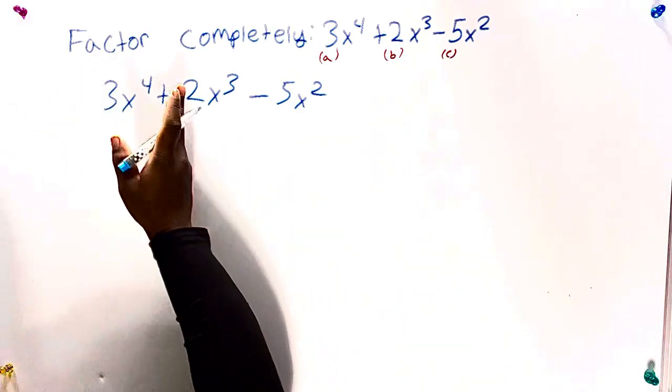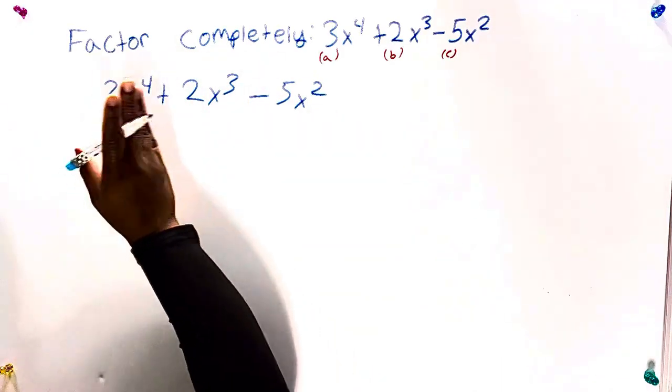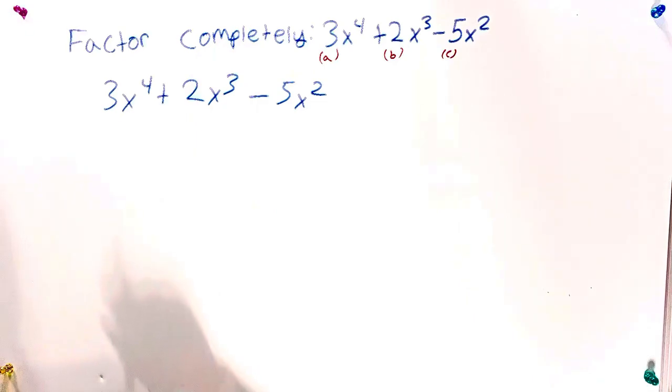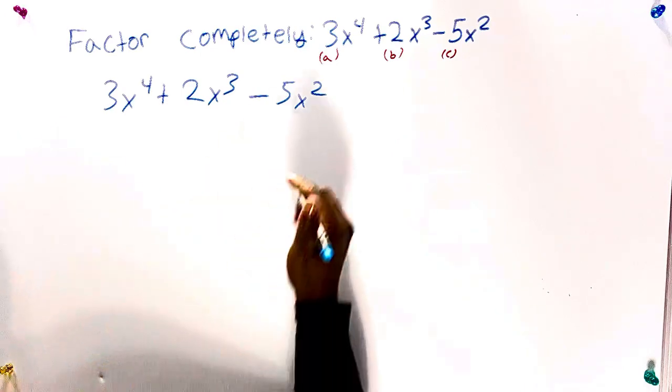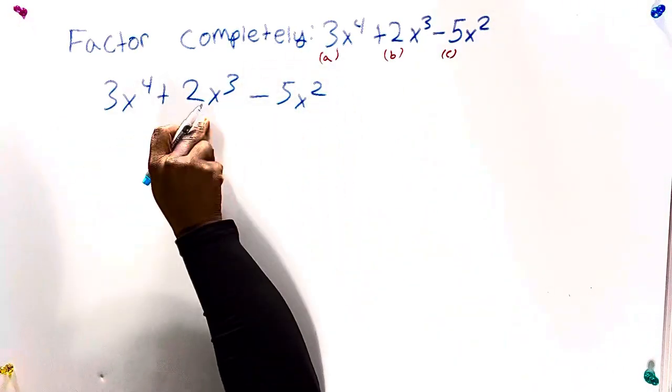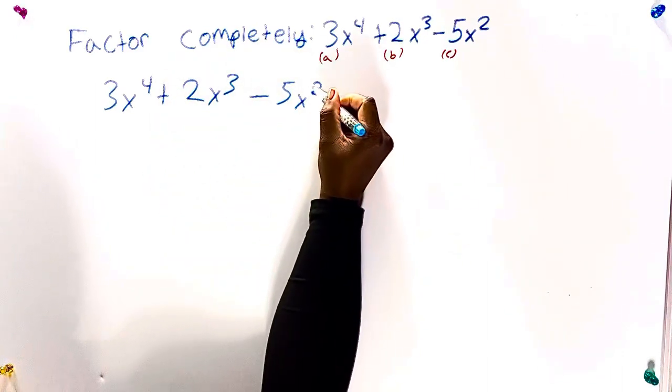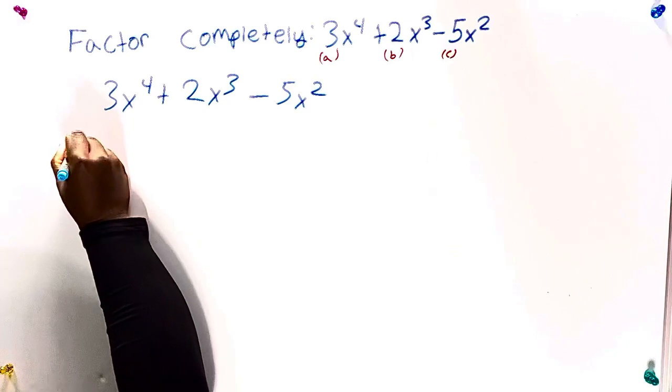I have a 3, I have a 2, I have a 5. Nothing common with them. But I have an x here, I have an x here, I have an x here. So what we should do is try to remove that x. Now let's look for the lowest x we have. We have x to the fourth, x to the third, x to the second. The lowest one would be the 2, right? So we'll remove x squared.